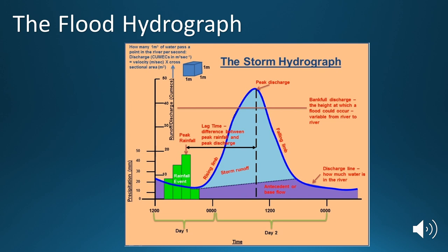And we've also got something called the bank full discharge. The bank full discharge is that straight line running across the hydrograph. And the bank full discharge represents the height at which a flood could occur. So if our dark blue line, our discharge line, goes above the bank full discharge, we might expect the river to potentially flood, which could obviously be a risk to anyone in the local area, any houses, any businesses, that are situated within and on the floodplain or near to the river channel itself.